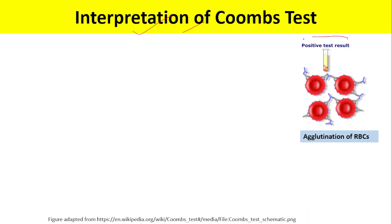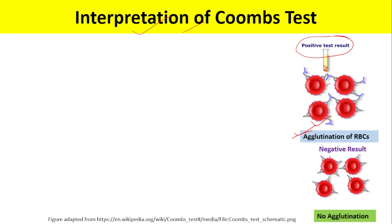In interpreting the Coombs test: a positive result shows agglutination of RBCs, where the Coombs reagent forms bridges between the anti-RBC antibodies causing clumping. This is a positive Coombs test. In a negative Coombs test, we do not see any agglutination or clumping of RBCs.